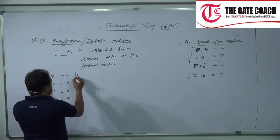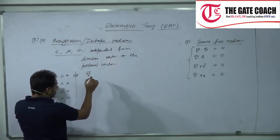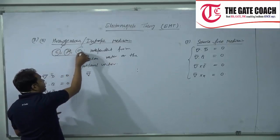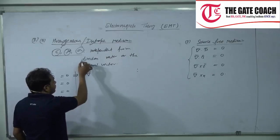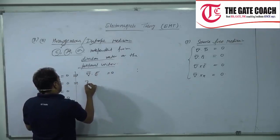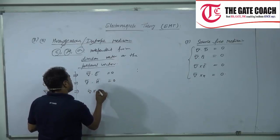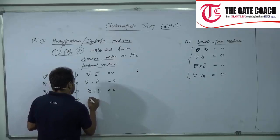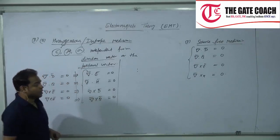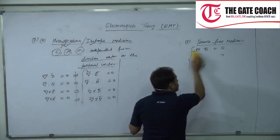We know that D is written as epsilon E. So for a homogeneous or isotropic medium, mu, epsilon, and conductivity are independent from the directional or positional vector. Therefore, del dot E will also become 0, del dot H will also become 0, del cross D will also become 0, and del cross B equals 0, for homogeneous isotropic source-free medium.